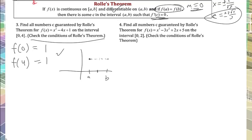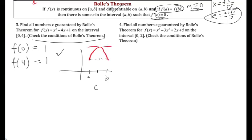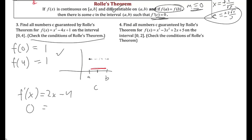Setting the first derivative equal to 0 to find when the slope is 0, we get x = 2. The interval was [0, 4] so it was exactly in the middle at x = 2. This is exactly the same process as mean value theorem — just the specific case where f(a) equals f(b).